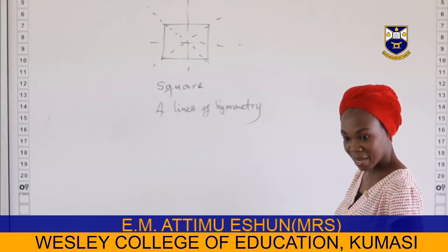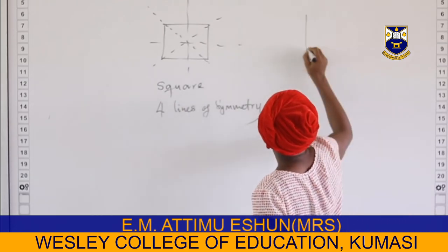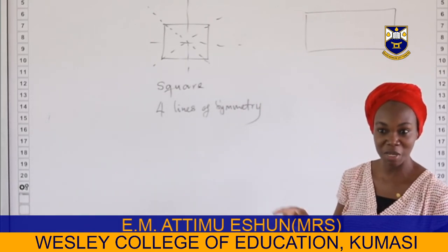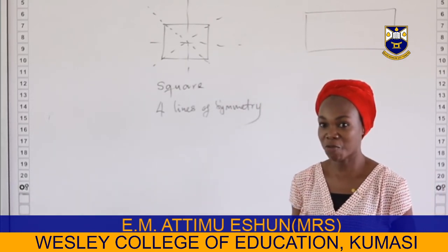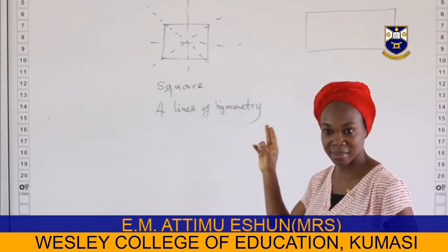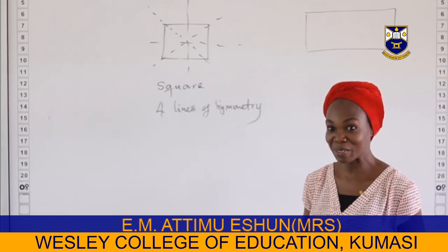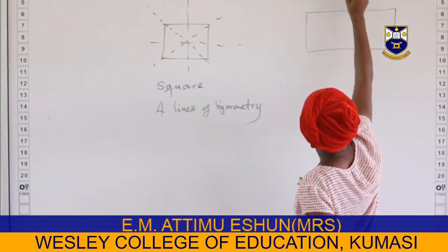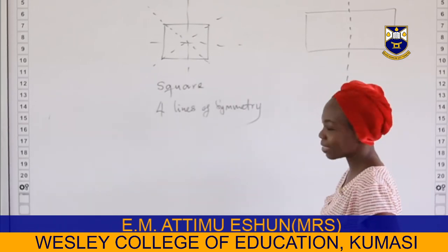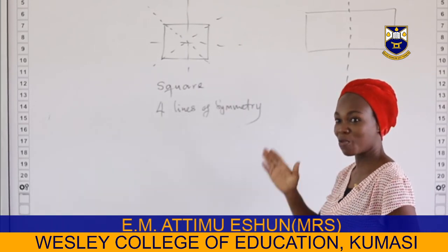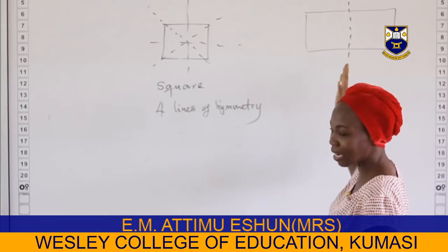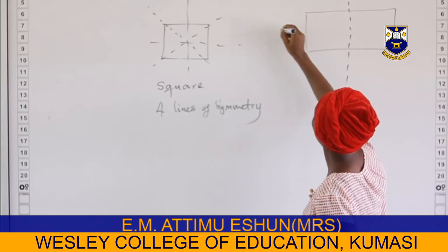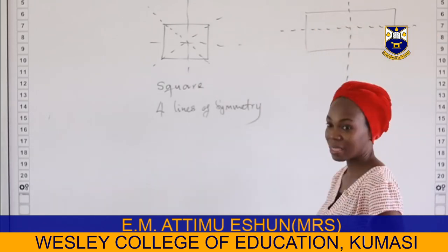My second plane figure will be a rectangle. For a rectangle, the two opposite sides are equal, so the lines of symmetry are two: a vertical line dividing the shape into two equal halves, and the second one will be a horizontal line.